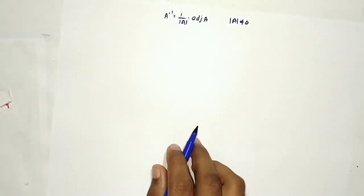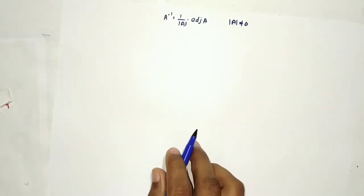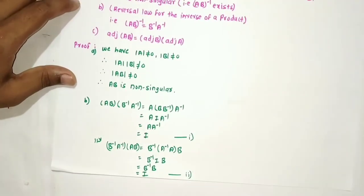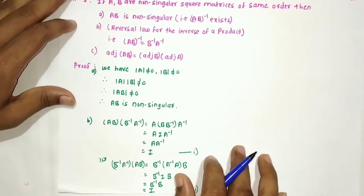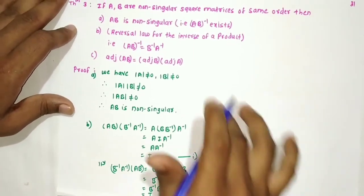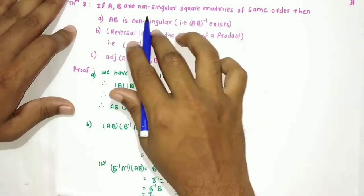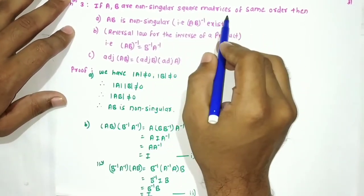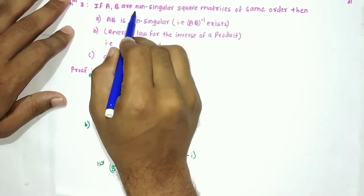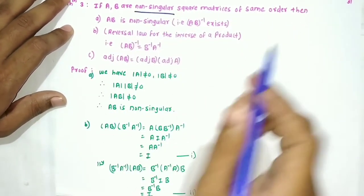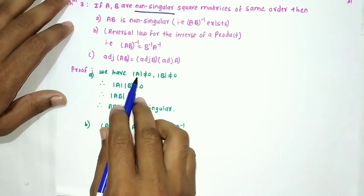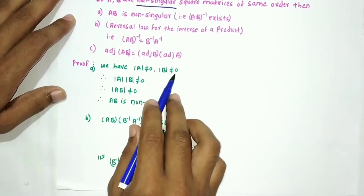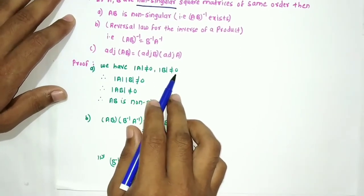Next we have a theorem. If A and B are non-singular square matrices of the same order — meaning determinant of A is non-zero and determinant of B is non-zero — then we must show that AB is non-singular.